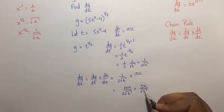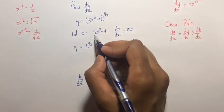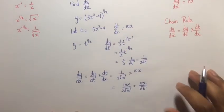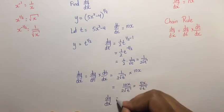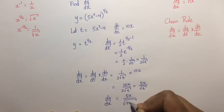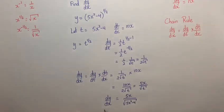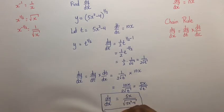We substitute back the value for t as 5x² - 4 to give us that dy/dx is equal to 5x divided by the square root of 5x² - 4. This is the expression for dy/dx.